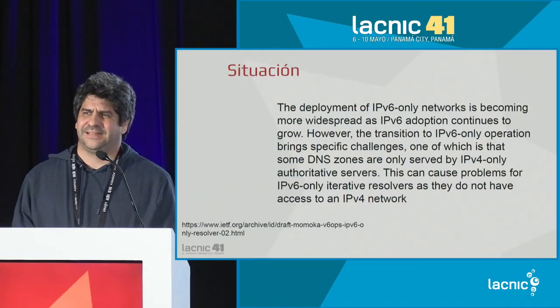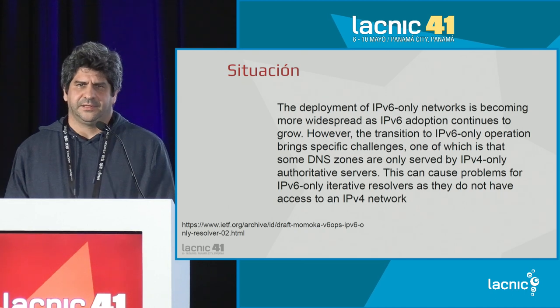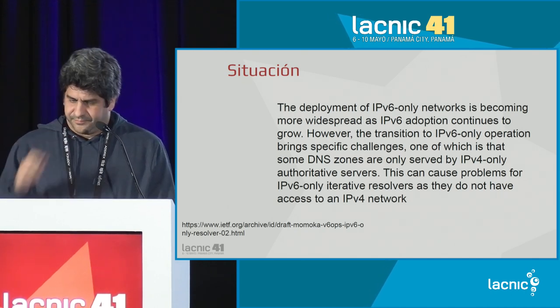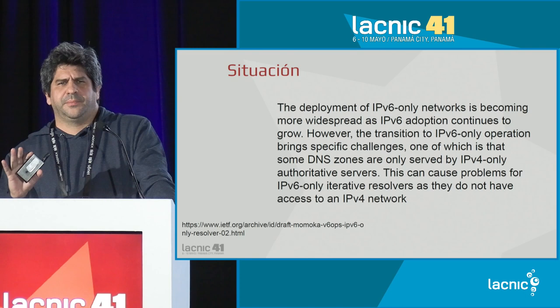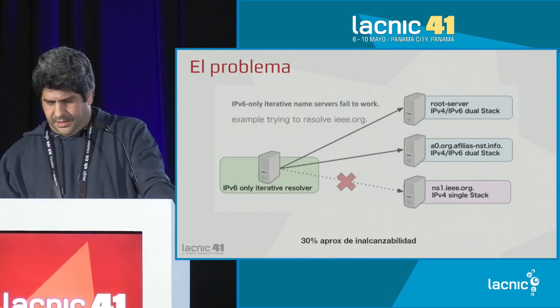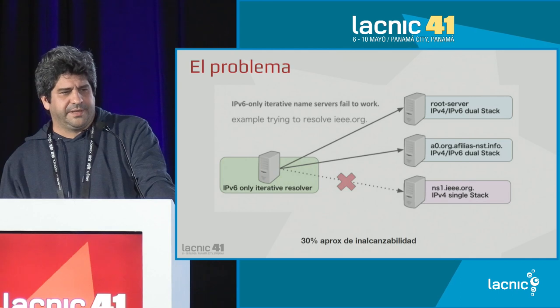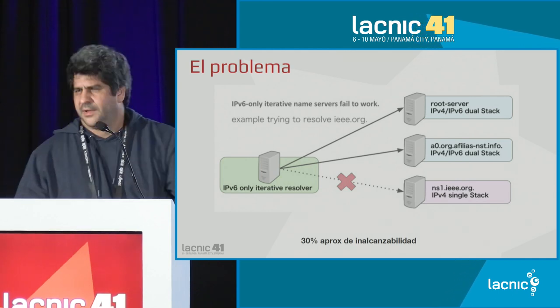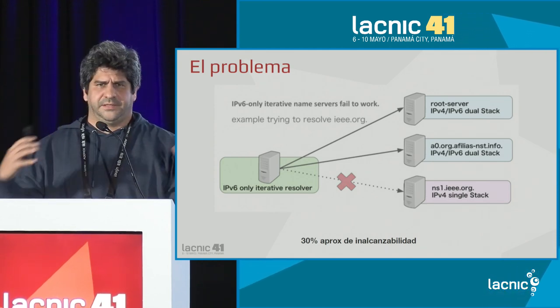Thank you Jose. Let us continue with this topic. The current situation is that the deployment of IPv6-only networks is becoming more and more widespread in the world. This is referenced from an IETF draft which states that when one goes to the IPv6-only world, one has to face challenges and we have to pay attention to these. The problem involves a recursive DNS server — also called an iterative resolver.